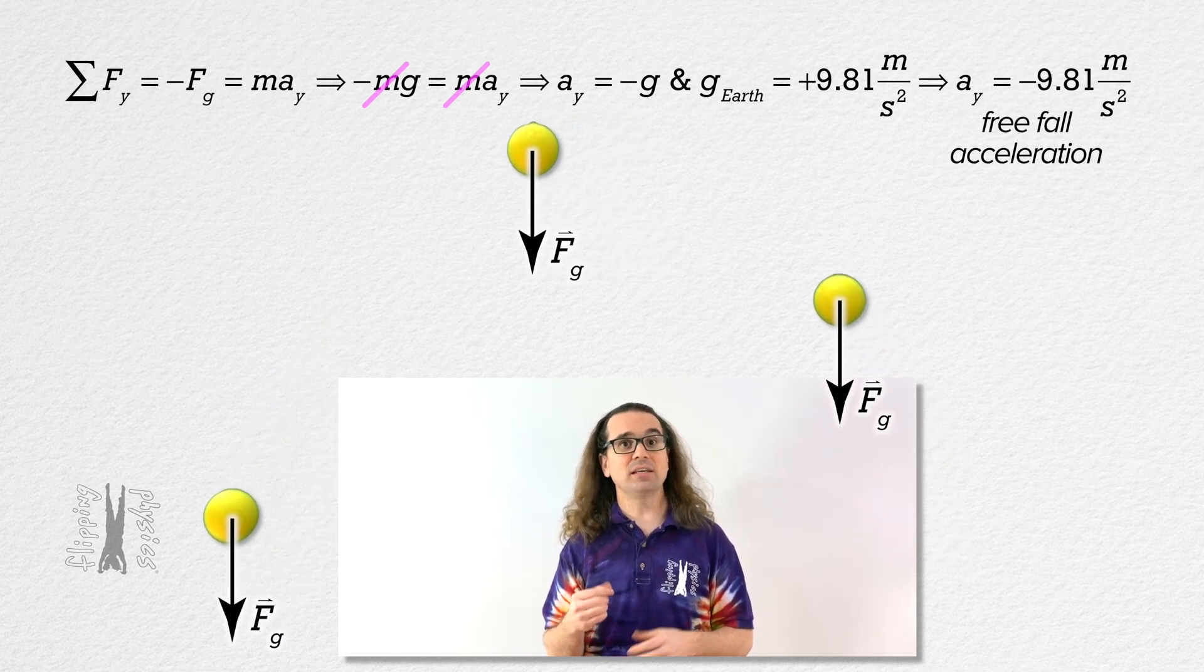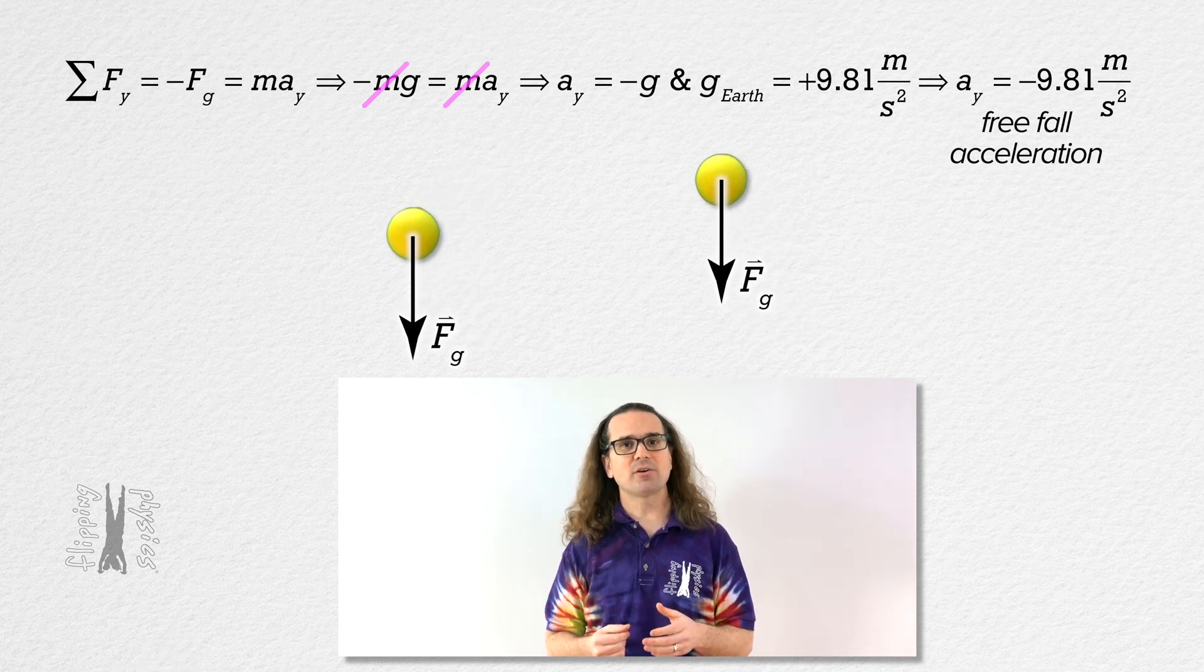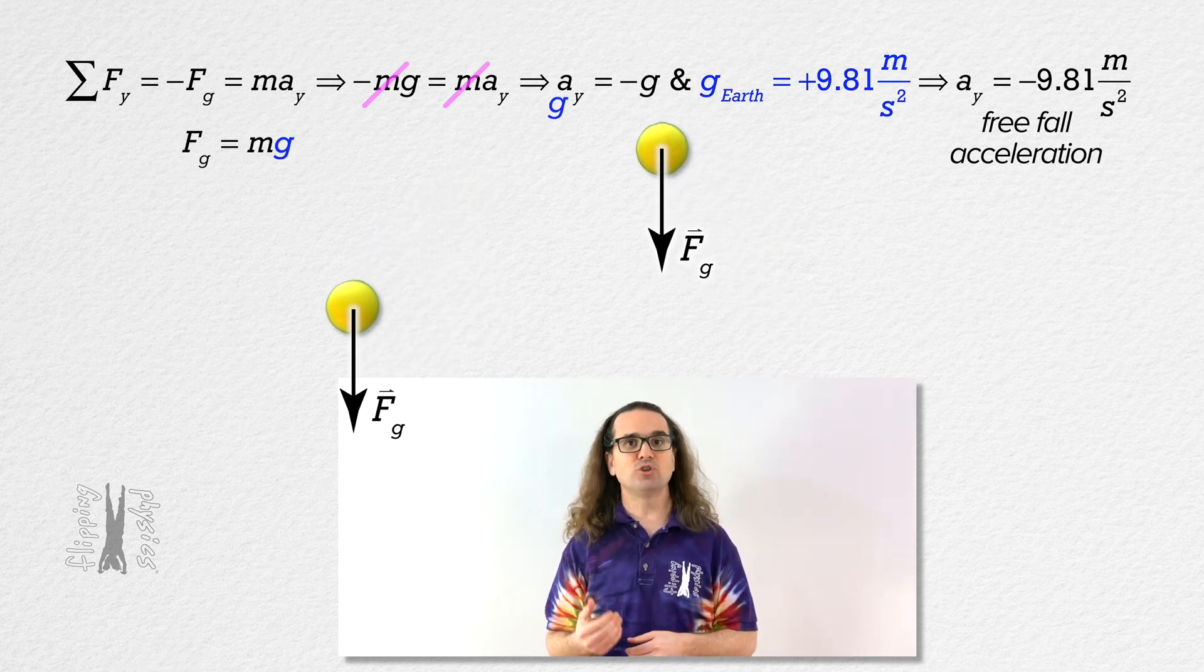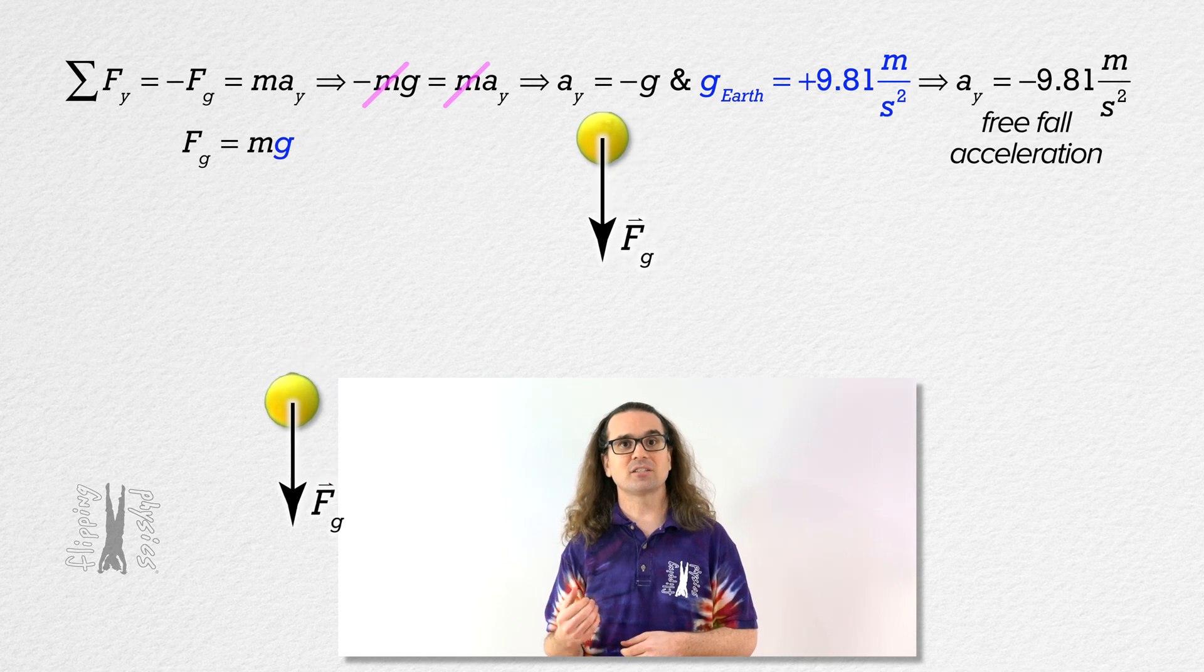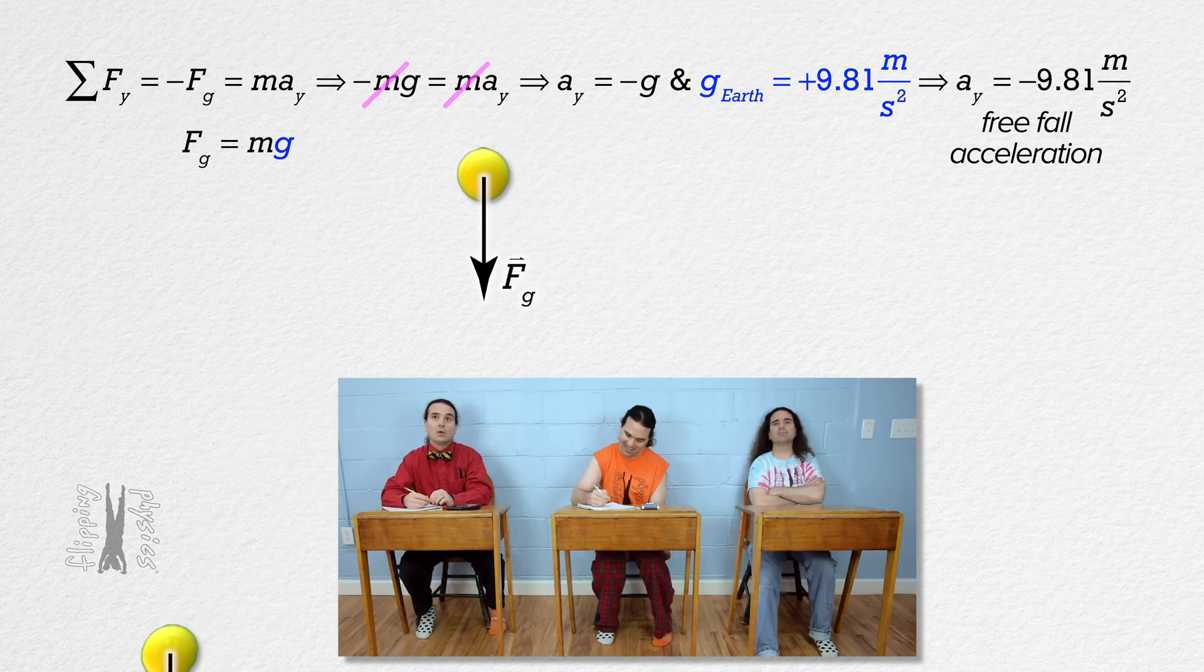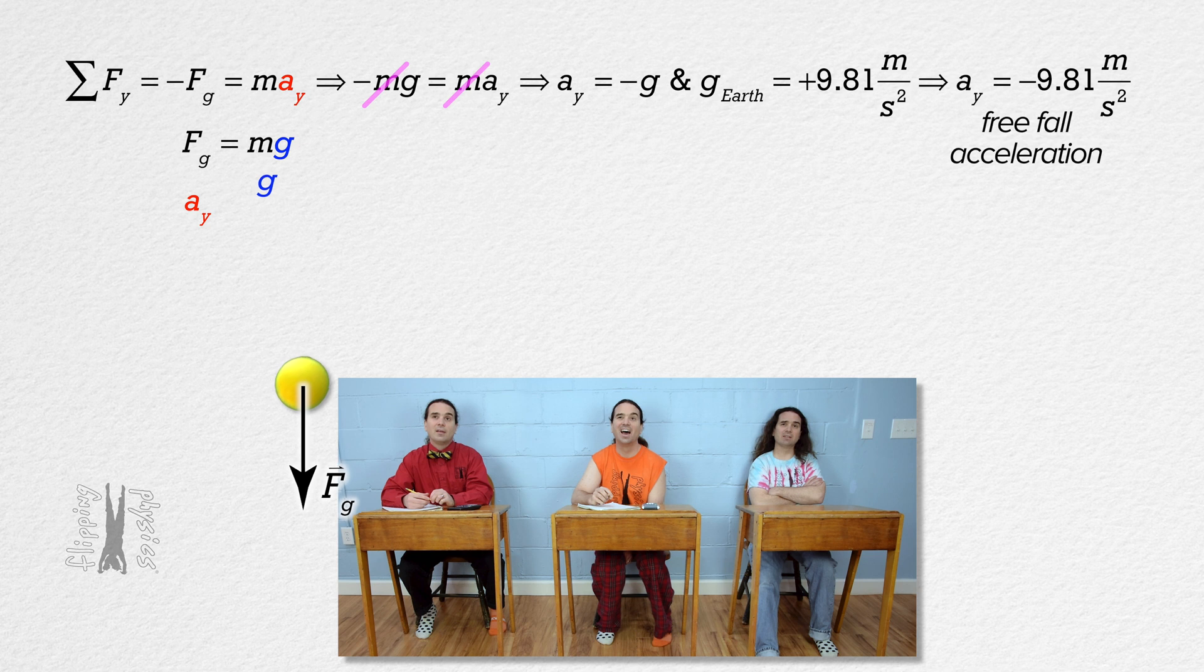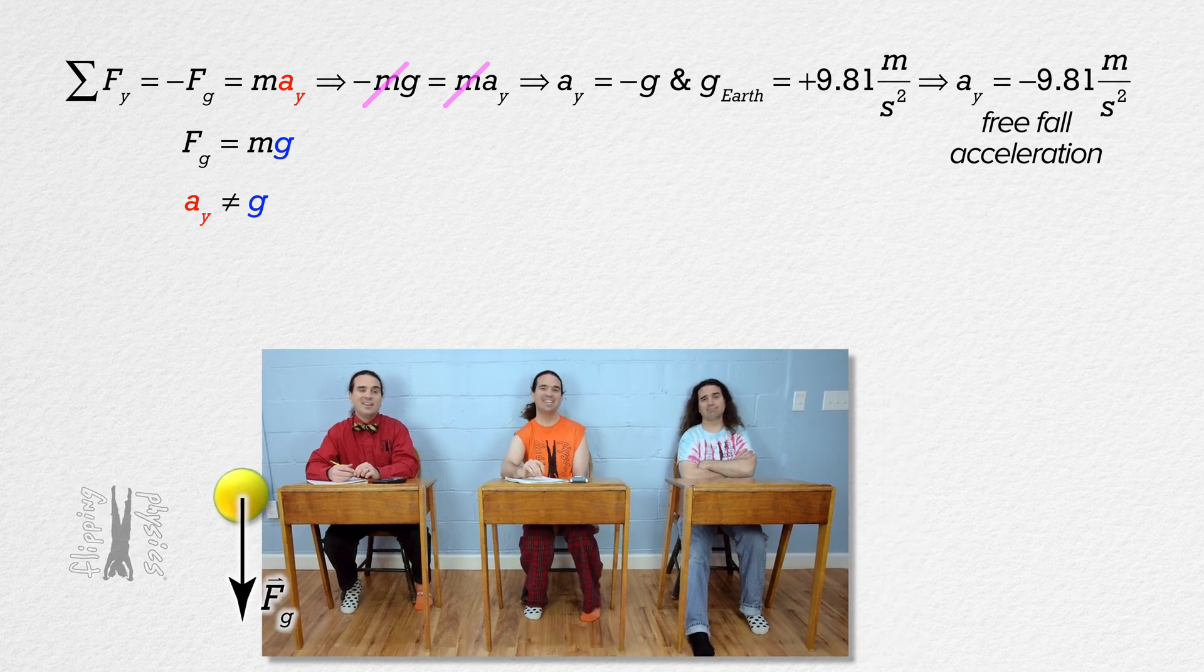Notice the acceleration due to gravity, little g, is not the acceleration of the object, but rather, it is the value by which you multiply the mass of an object to get the force of gravity the Earth exerts on an object. Oh. So, the acceleration of an object and acceleration due to gravity are two different things. Yeah, exactly.